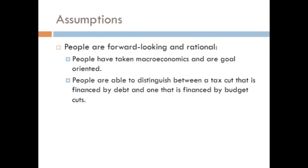Our next assumption is that people are forward-looking and rational, and that people are also able to distinguish between a tax cut that is financed by debt and one that is financed by budget cuts. And in the future, in this presentation, when we look at criticisms, this will be our most criticized assumption of all four.